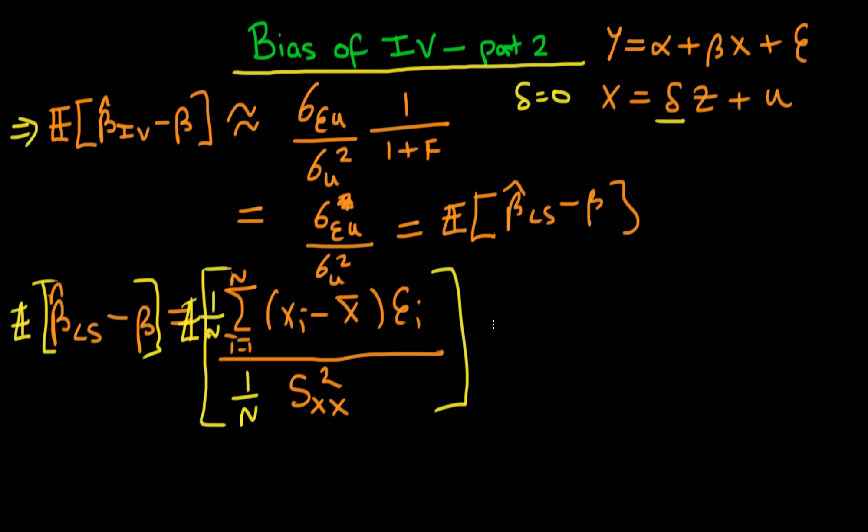Although this isn't exactly correct, it provides intuition. You can think about replacing the numerator by the population quantity sigma_x_epsilon and the denominator by sigma_squared_x.